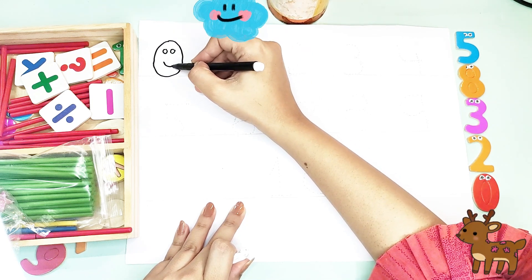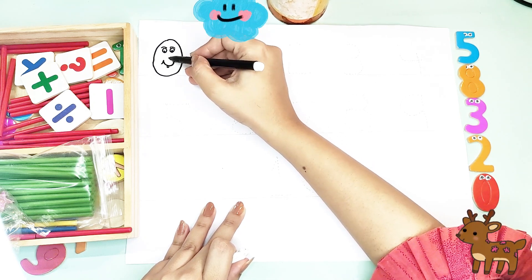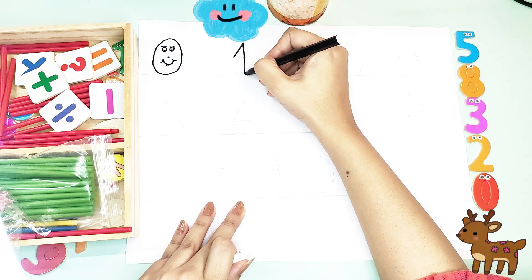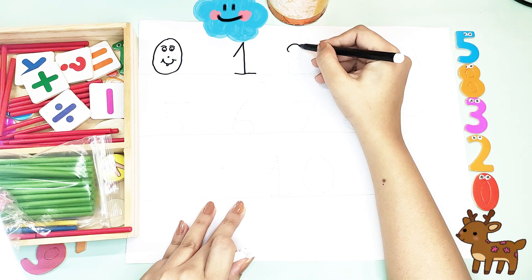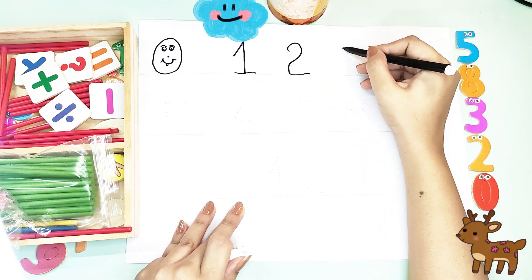Let's learn numbers. So the first smiling number is number zero. One. Two. This is how you write number two.